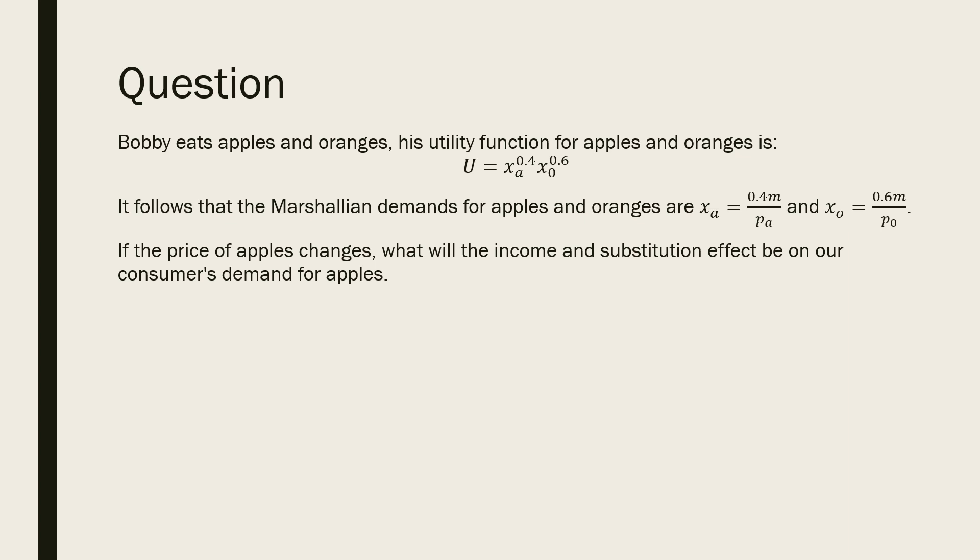It follows that his Marshallian demands for apples and oranges are: x_a equals 0.4m over the price of apples, and x_o, our quantity of oranges demanded, equals 0.6m over the price of oranges. If the price of apples changes, what will the income and substitution effects be for our consumer's demand for apples?